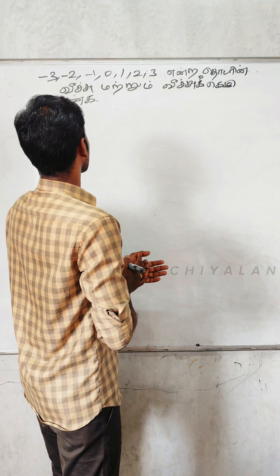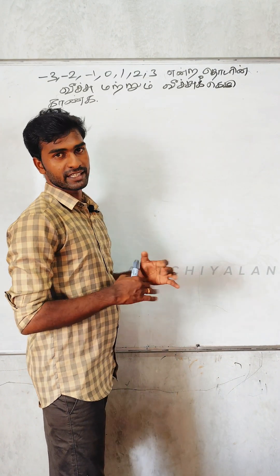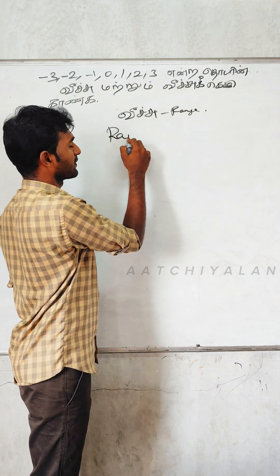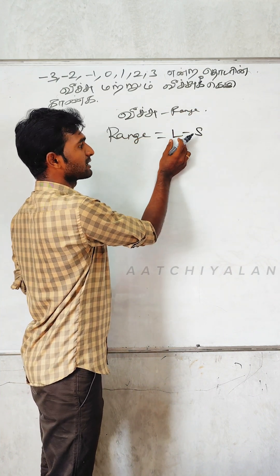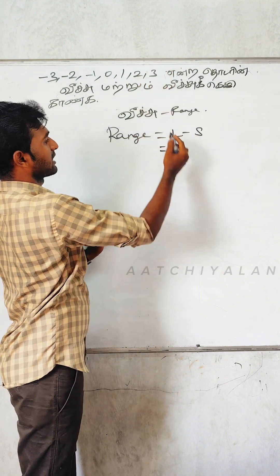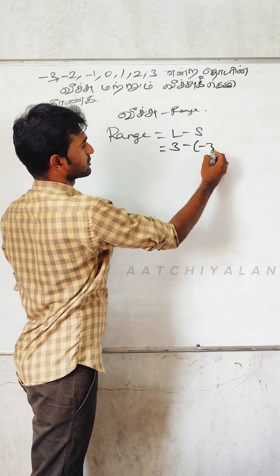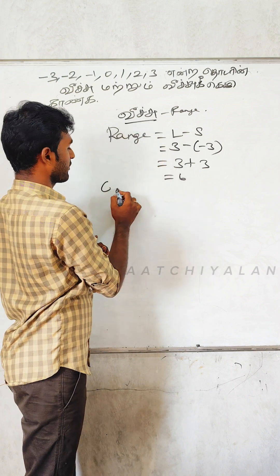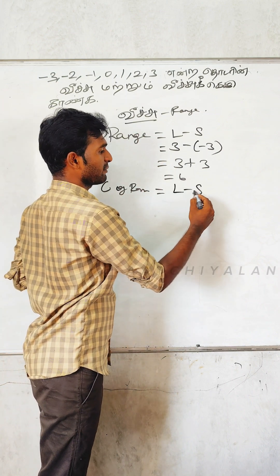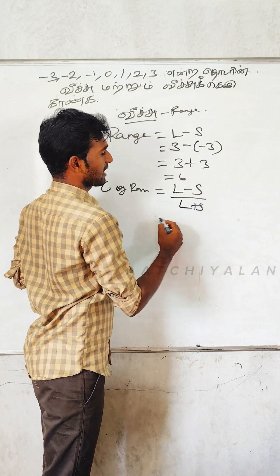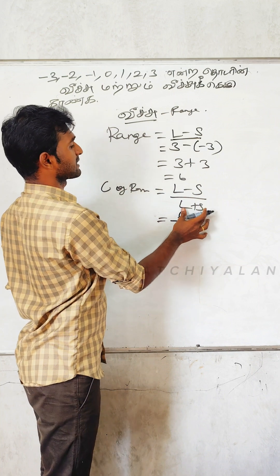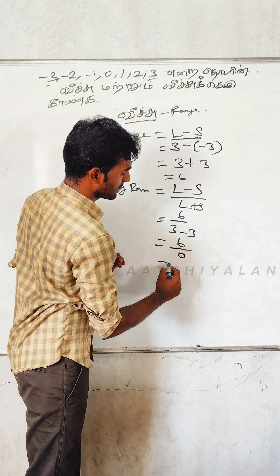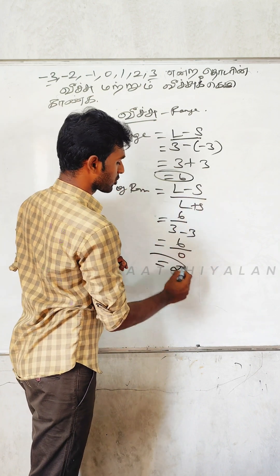Minus 3, minus 2, minus 1, 0, 1, 2, 3. Reach the same way. Range is the same way: L minus S — largest value minus smallest value. Here the largest value is 3, smallest is minus 3. So minus minus plus 3: that gives 6. Coefficient of range — the formula is L minus S by L plus S. L minus S is R, which is 6. L plus S: 3 plus minus 3 is 0. So 6 by 0. Range is 6 and coefficient of range is undefined.